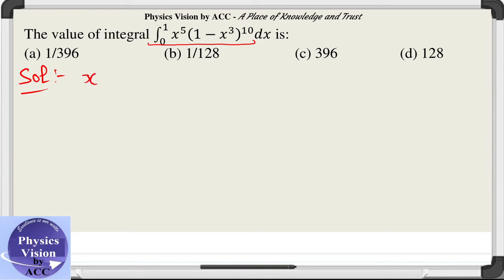Let us substitute the value of x cube. Let us substitute x cube as a new variable, let us say t. This gives us x square x square dx is equal to dt by 3.